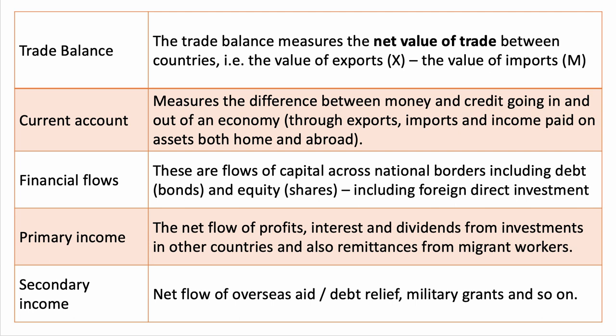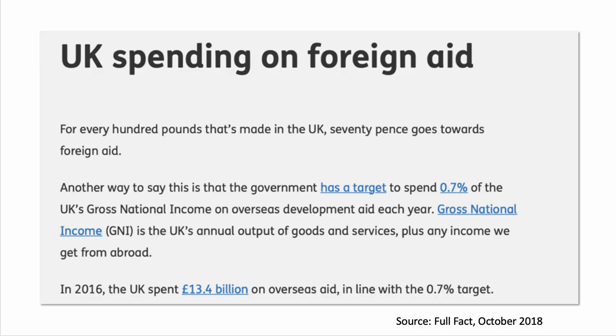The final of our five definitions is secondary income, which is again part of the current account. Secondary income measures the net flow of money coming in versus going out on things like overseas aid, debt relief, and military grants. In the UK, there is a legally binding commitment to spend 0.7% of gross national income on overseas development assistance. In 2016, that was just over £13.4 billion — now probably around £14 billion — meaning for every £100 of GNI, £0.70 goes towards foreign aid, and this appears on the secondary income part of the balance of payments.